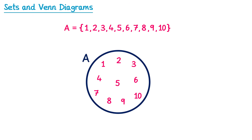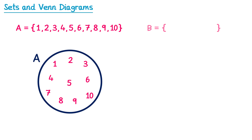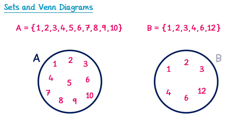Let's have a look at a second set, set B. Set B is going to be the set of numbers that are factors of 12 — so all of the numbers that divide into 12, which are 1, 2, 3, 4, 6, and 12. Notice how there are some numbers that are in both set A and set B — for example, 1, 2, 3, 4, and 6 — because they're both positive integers less than or equal to 10 and also factors of 12.